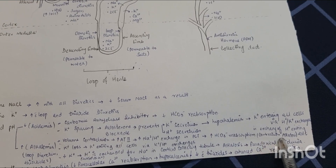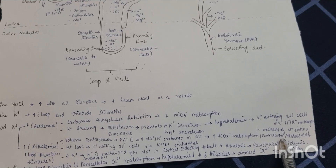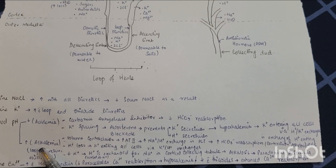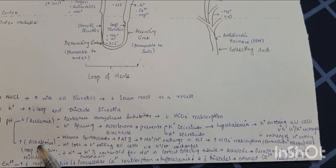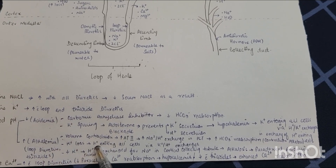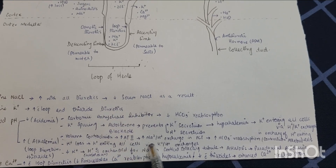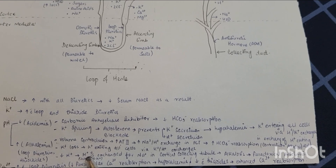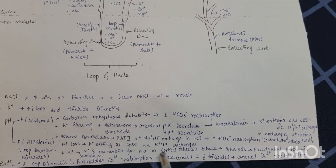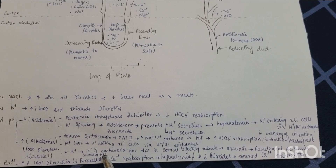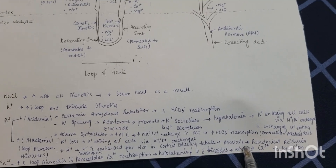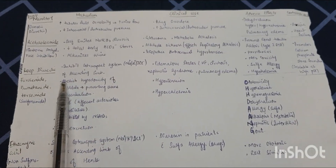Alkalemia — an increase in blood pH — occurs due to potassium loss. Potassium exits cells via hydrogen-potassium exchangers, and when decreased potassium causes hydrogen to be exchanged for sodium in the cortical collecting tubule instead of potassium, this results in alkalosis, also sometimes called paradoxical aciduria.